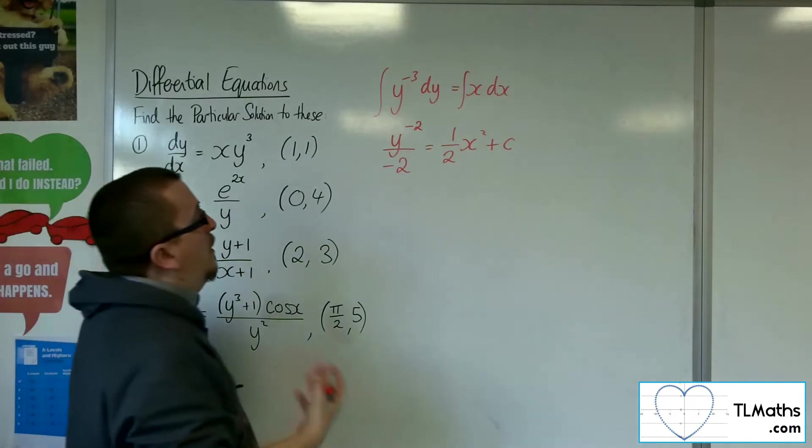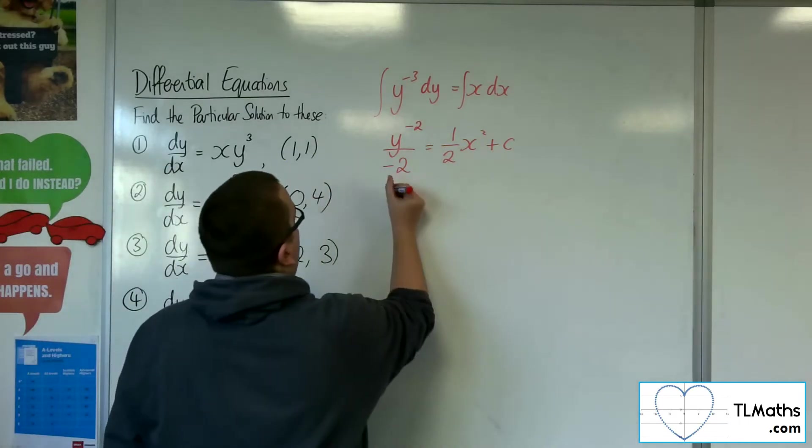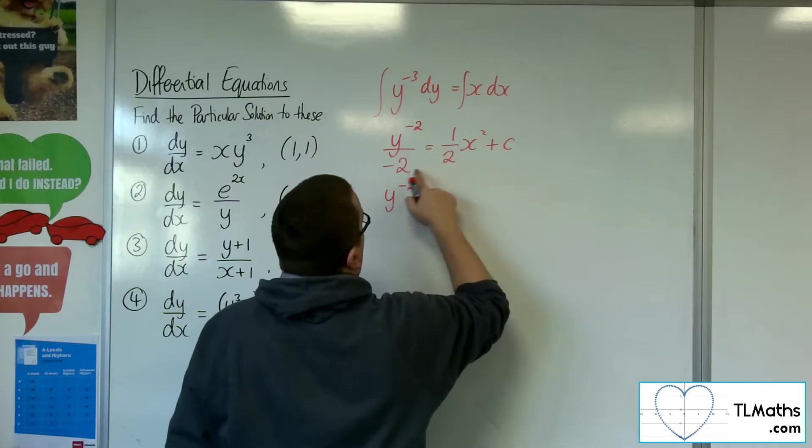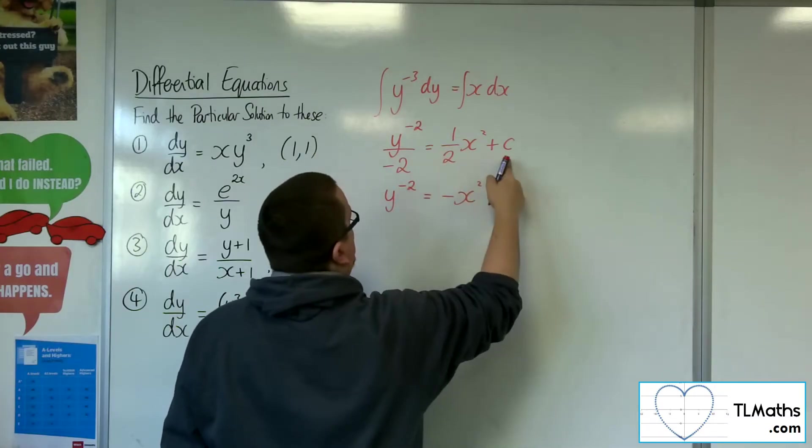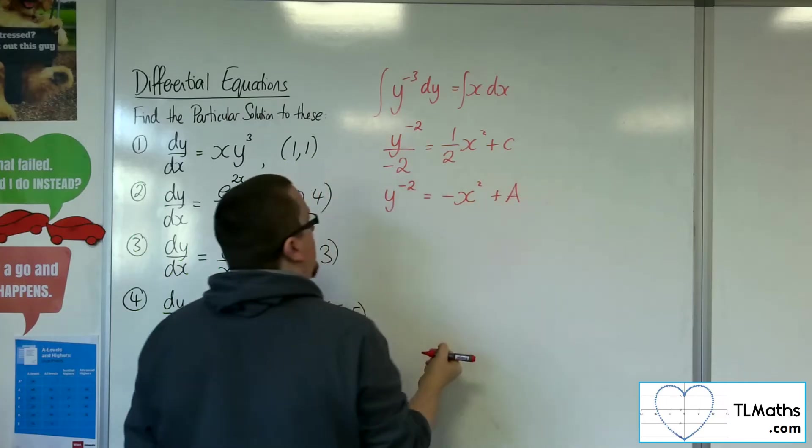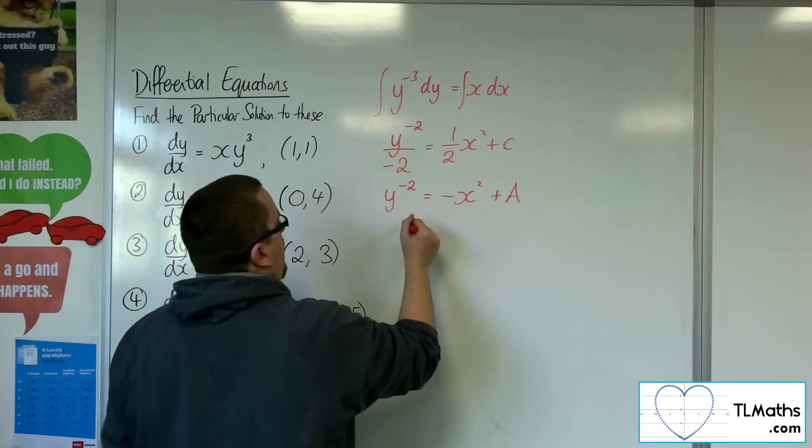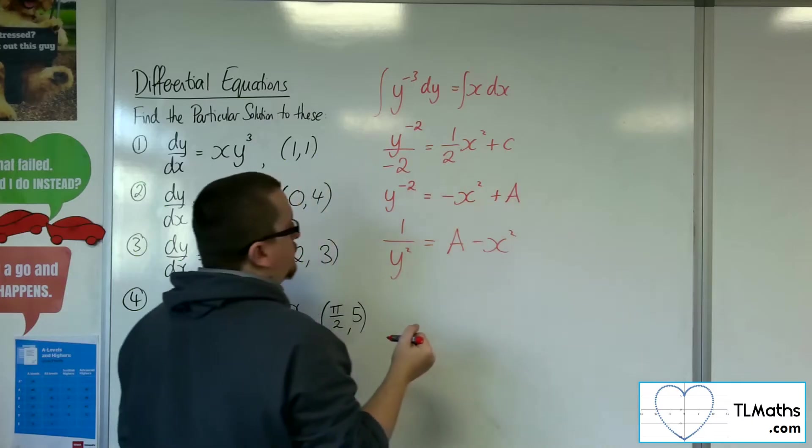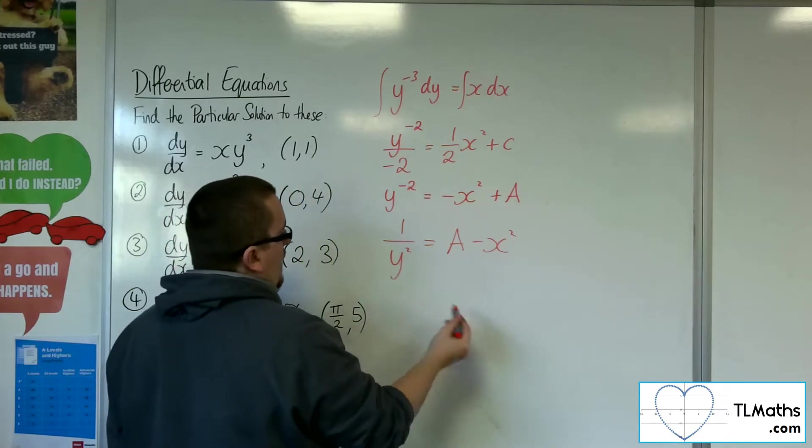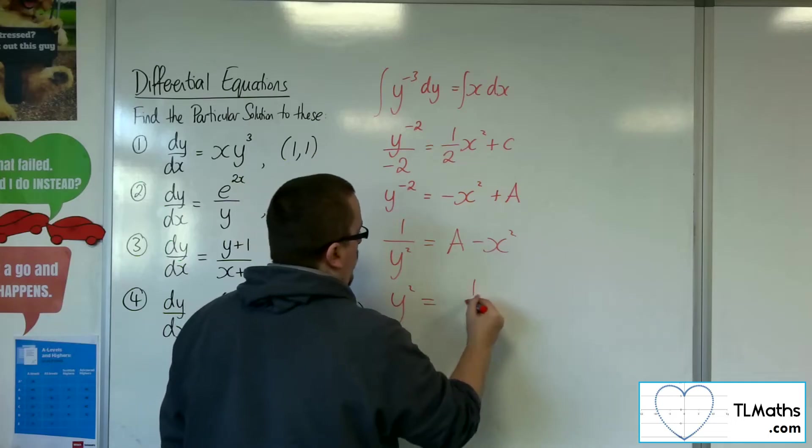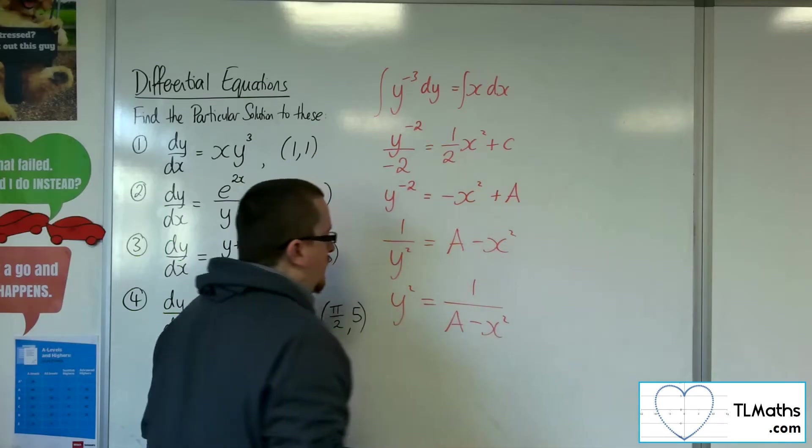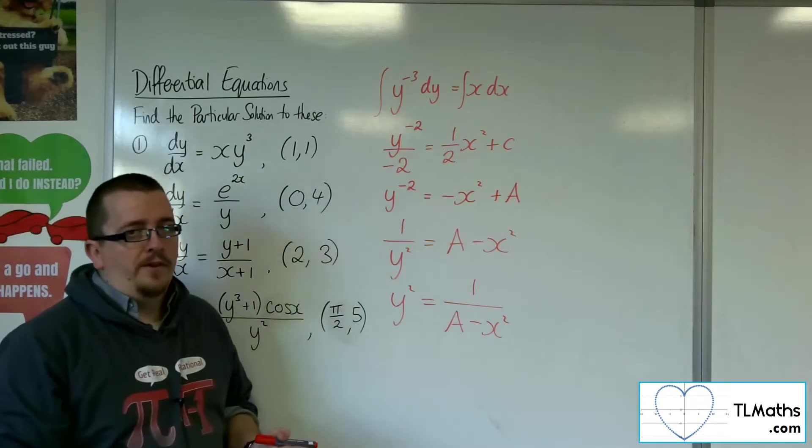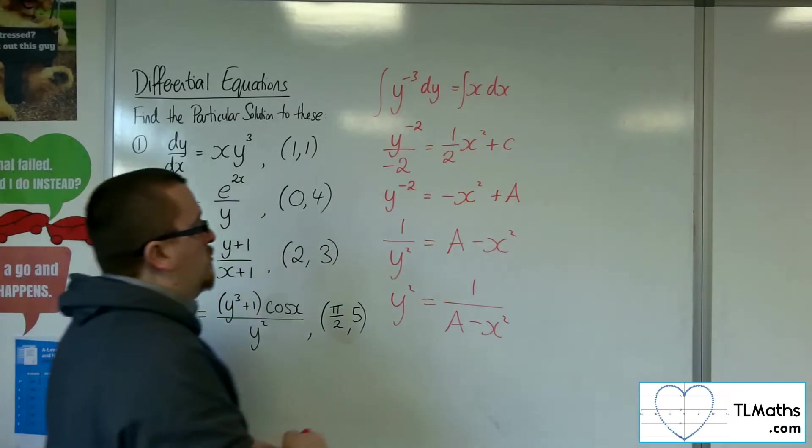So what I might do at this stage is to multiply everything through by minus 2. To leave me with y to the minus 2 is equal to minus x squared. And minus 2 times c is just another constant, so let's replace that with a. So I can write that as 1 over y squared equals a minus x squared. And if I wanted to, I could then write that as y squared equals 1 over a minus x squared. I probably wouldn't want to square root at this stage because that's going to bring in a plus minus. So that's my general solution.